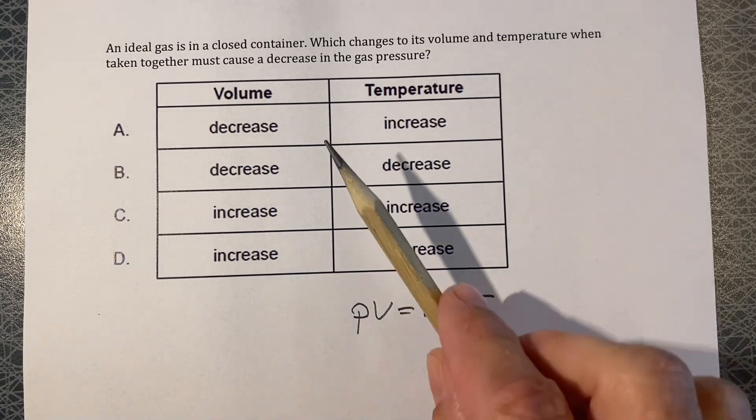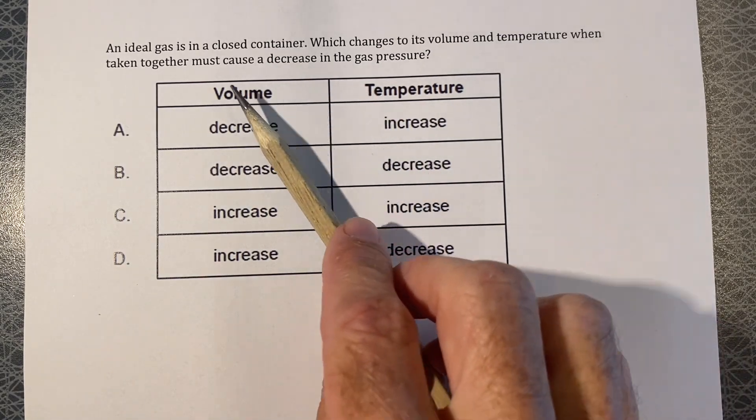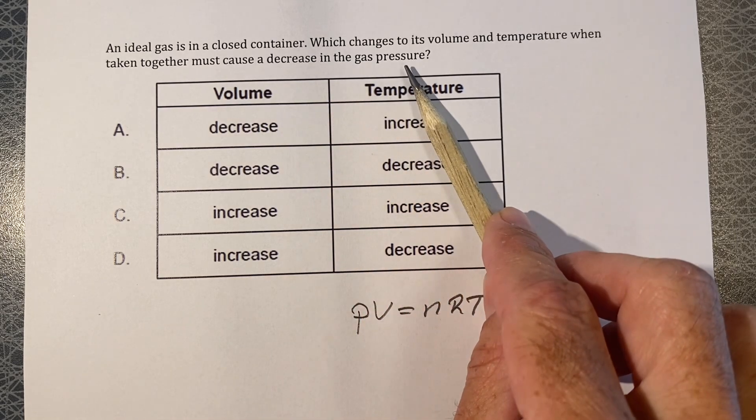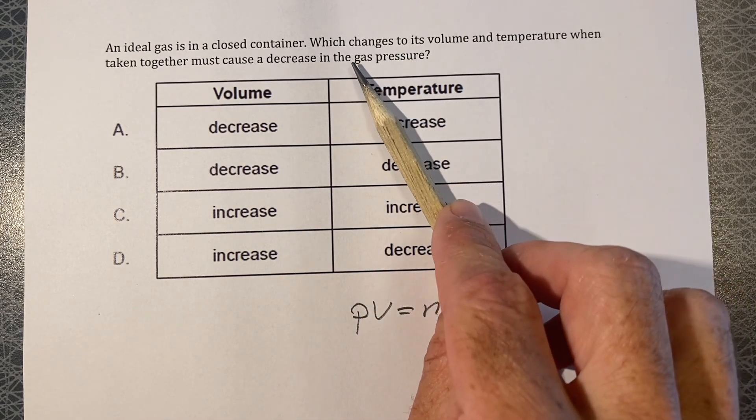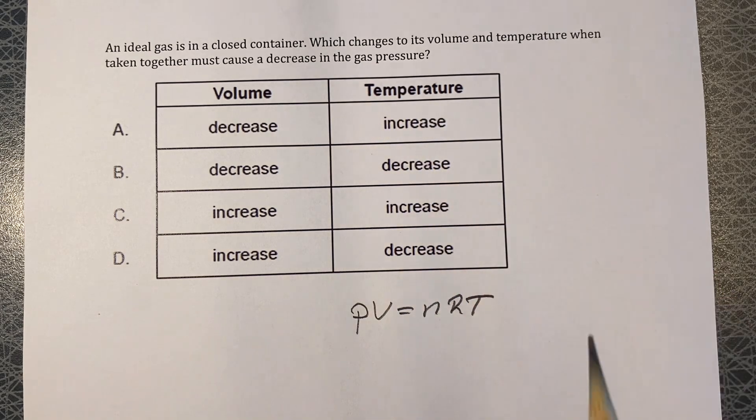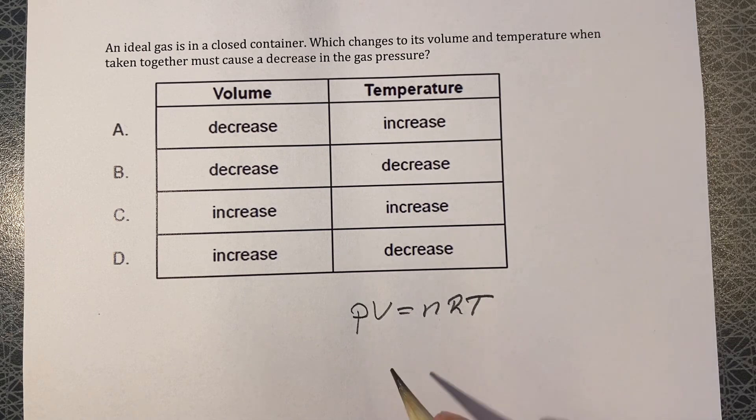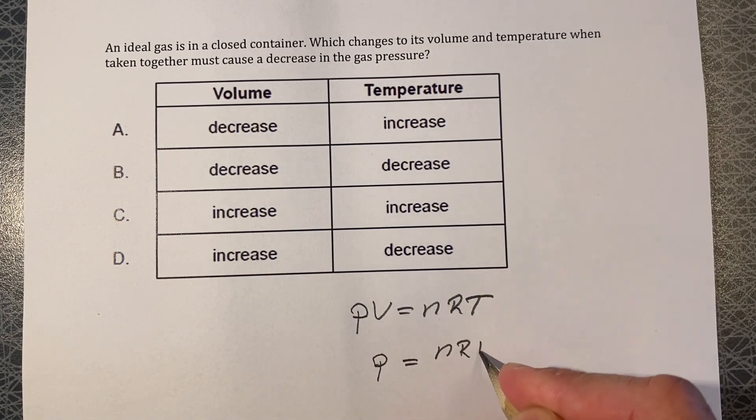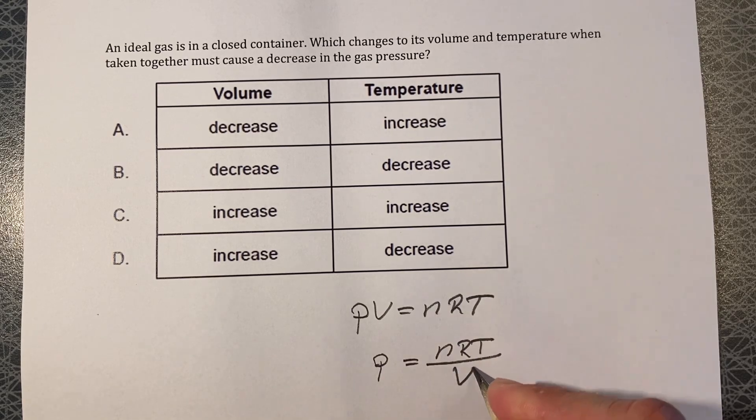And then let's see, what do they ask for? Cause a decrease in gas pressure. If they're asking for gas pressure, then we need to solve the equation for pressure, for P. So P equals nRT over V.